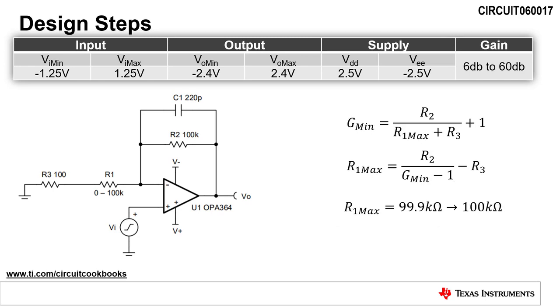The next step is to calculate the maximum R1 resistance to set the minimum gain, Gmin. The minimum gain is equal to R2 divided by the maximum resistance of R1, which is Rmax, plus R3 plus 1. Rearranging the equation to solve for R1 max, we get R2 divided by Gmin minus 1 minus R3. Plugging in Gmin and R3 into the equation, we calculate a maximum R1 resistance of 99.9 kilo ohms. Since 99.9 kilo ohms is not a standard value, we will use 100 kilo ohms instead, as shown in the schematic.